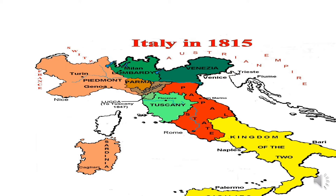The most important kingdom in Italy was Sardinia. Then in the north we had Lombardy, Venezia, Parma, and Modena. Tuscany and the Papal States were in the center. And the Kingdom of the Two Sicilies, with Palermo and Naples, was in the south. This was Italy before unification.